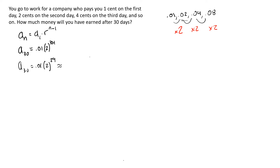Typing that into the calculator: 0.01 times 2 to the 29th — on that 30th day we would be making about five million three hundred and sixty-eight thousand dollars, so roughly 5.37 million dollars just on that last day. You can imagine the total amount of money earned over all 30 days is even more than that.